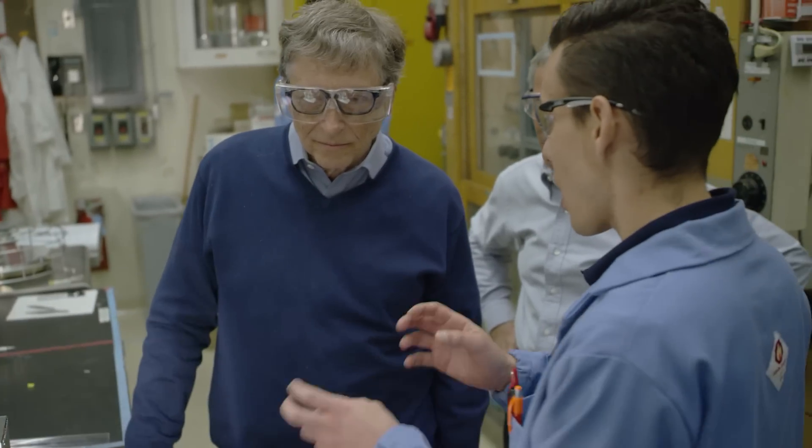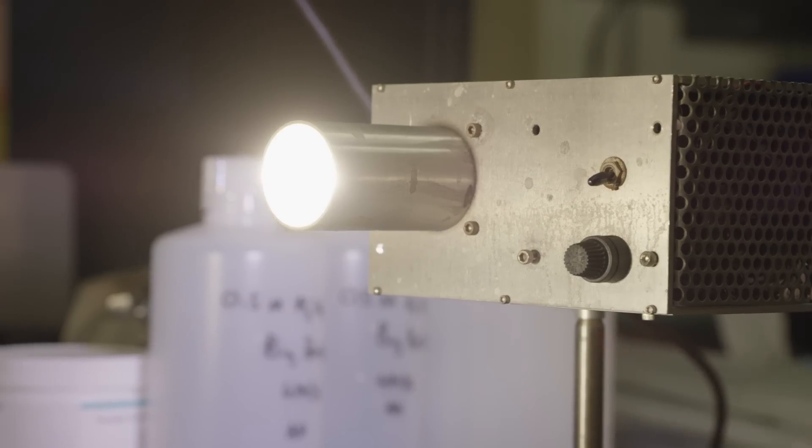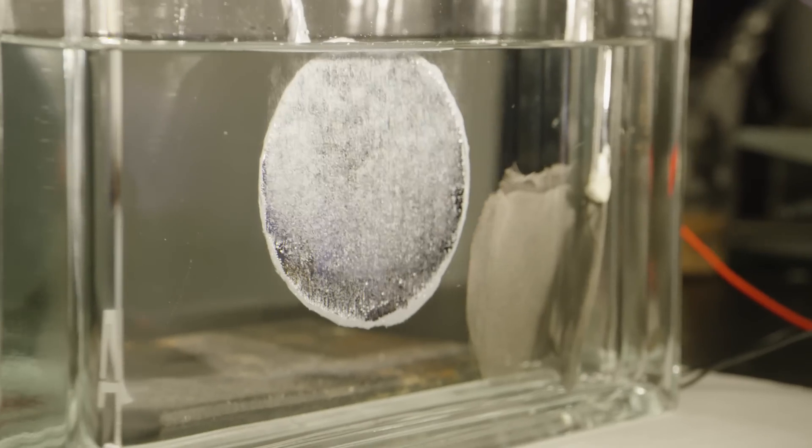Nate Lewis is a scientist at Caltech doing some amazing research. He's trying to turn solar energy into liquid fuel. Recently I got a chance to visit his lab to learn more about his progress.